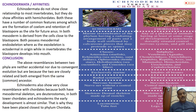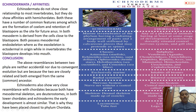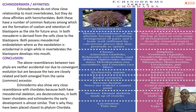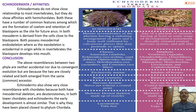Both possess mesodermal endoskeleton, while in invertebrates generally the exoskeleton is ectodermal in origin, and the blastopore develops into the mouth. In conclusion, the above resemblances between the two phyla are not accidental. Both echinoderms and chordates are closely related and arose from the same common ancestor - this represents divergent evolution.